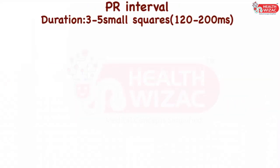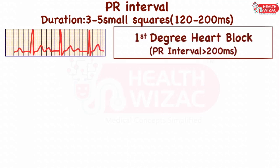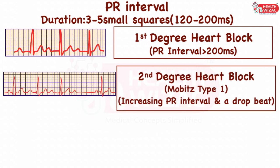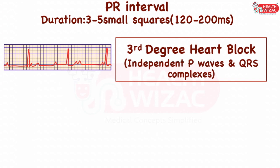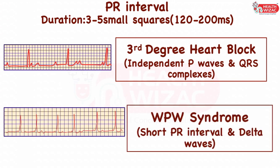PR interval represents the time interval between atrial and ventricular contraction phase, with a normal duration of 120 to 200 milliseconds. If PR interval is more than 200 milliseconds, ECG is labeled as first degree heart block. If PR interval gradually increases followed by one dropped beat, it is second degree heart block Mobitz type 1, also called Wenckebach's phenomenon. If PR interval is more than 200 milliseconds, constant, followed by one dropped P wave, it is Mobitz type 2. If P wave and QRS complex are independent of each other, it is third degree heart block. If PR interval is less than 120 milliseconds with a delta wave, ECG is labeled as WPW pattern or Wolff-Parkinson-White syndrome.